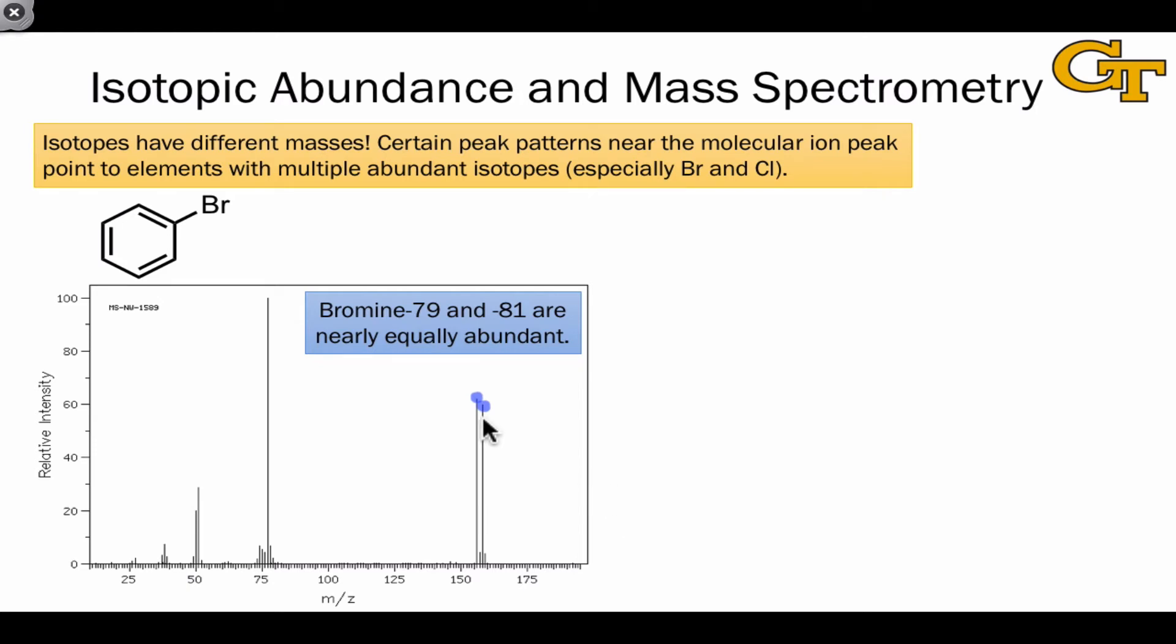Bromine-79 and bromine-81 are nearly equally abundant. Because the sample contains on the order of a mole of bromobenzene molecules, the mass spectrum reflects a 50-50 ratio of these two isotopes in the sample, with the peak of lower mass corresponding to molecules containing bromine-79 and the peak of higher mass corresponding to molecules containing the bromine-81 isotope.